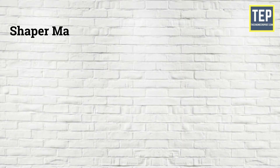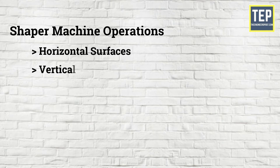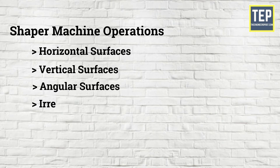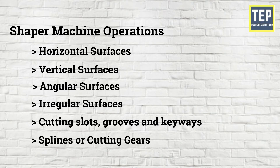The different types of operations performed in the shaper machine are: machining horizontal surfaces, vertical surfaces, angular surfaces, irregular surfaces, cutting slots, grooves and keyways, and machining splines or cutting gears.